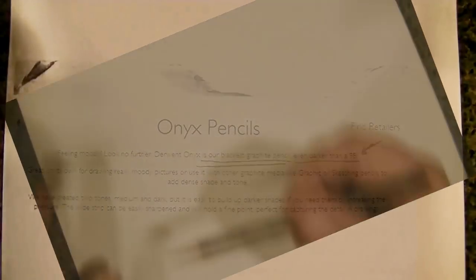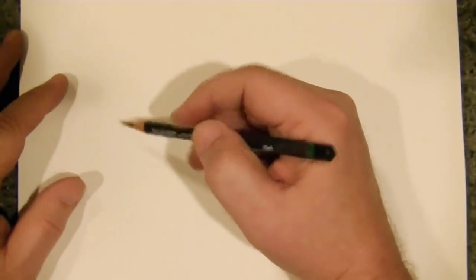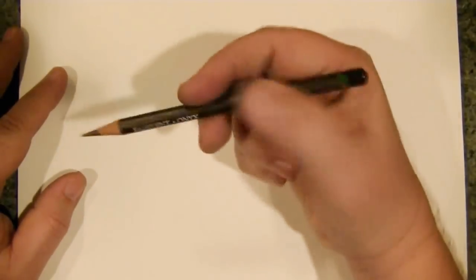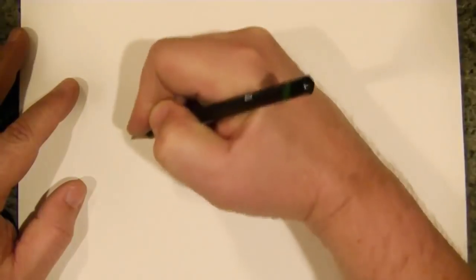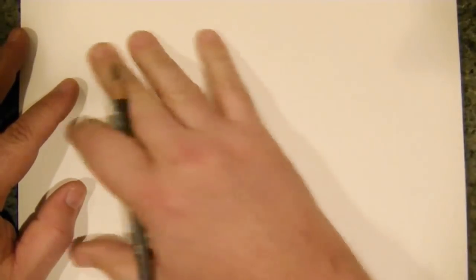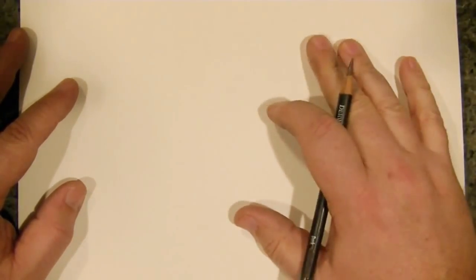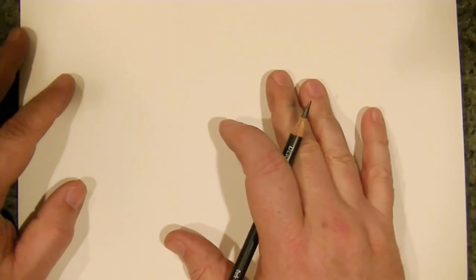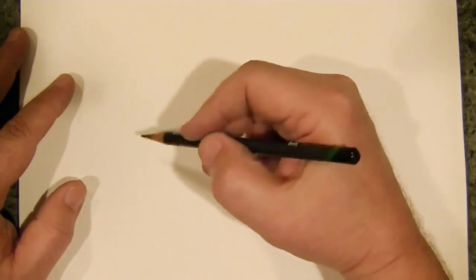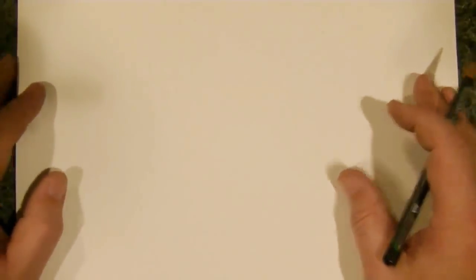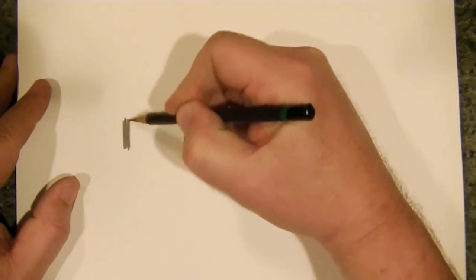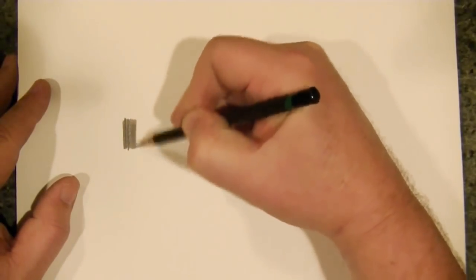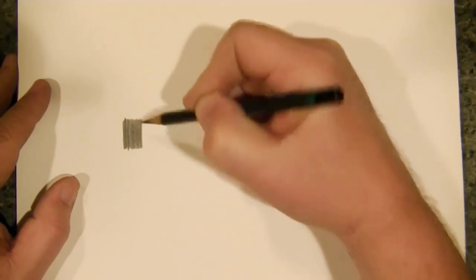First off, what I want to do here is I'm going to lay down some value with the dark pencil. Now normally I'm not going to press really hard on paper and ruin the tooth of my paper, but to take away any kind of doubt whatsoever, in this case I'm going to put my weight into it. Okay, so I am really going to lay down this graphite here.